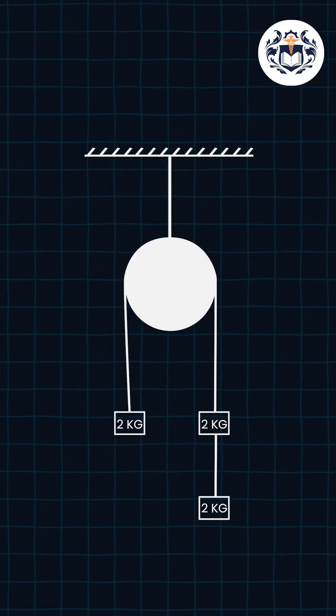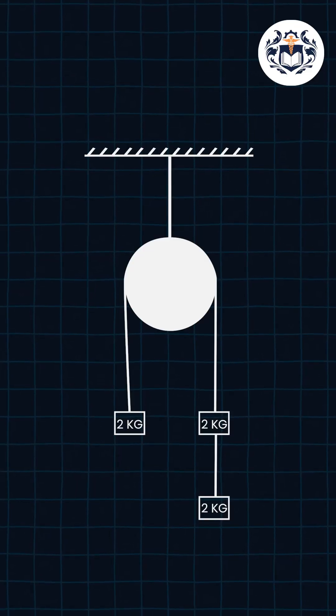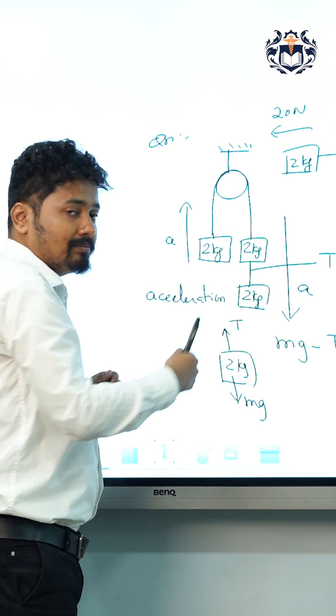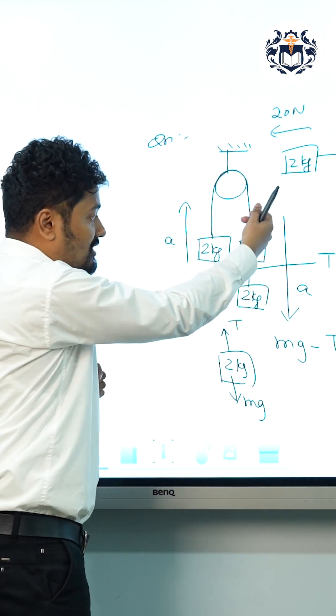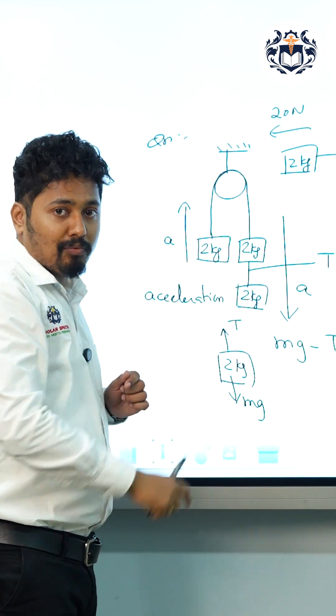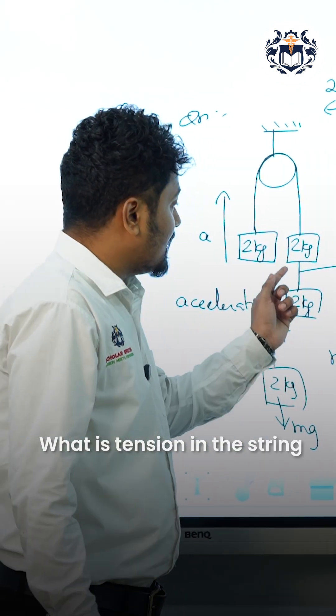Consider here 2 kg block and 2 kg block on the right side. If you release the system, the system starts moving in this direction. That means two blocks are moving downwards, one block is moving upward. Now the question is, what is tension in the string?